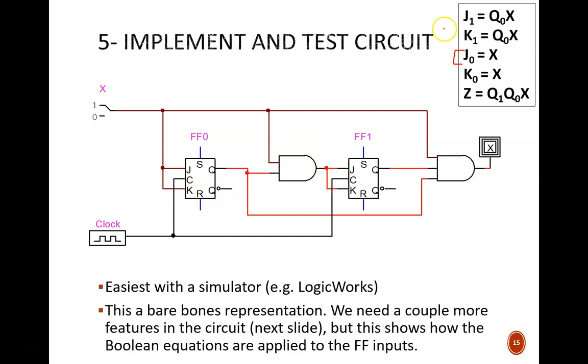J1 equals Q0 and X. So, we see an AND gate. One input to it is X. The other input is the Q output from flip-flop 0. The AND gate feeds straight into the J1 port, and also K1 in this case. Finally, the output signal Z is created by this AND gate.